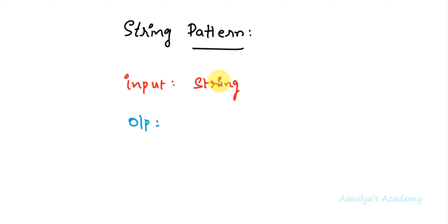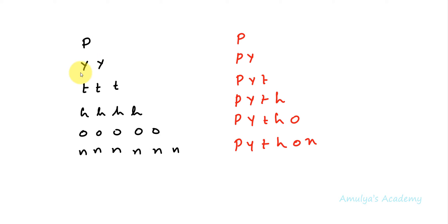Today's first pattern is printing a string in the right triangle shape. For example, taking the string 'python', I want to print its characters in a right triangle shape. In the first row I want 'p', next 'y', next 't', next 'h', next 'o', and next 'n'. To print this pattern I will use the nested for loop method.